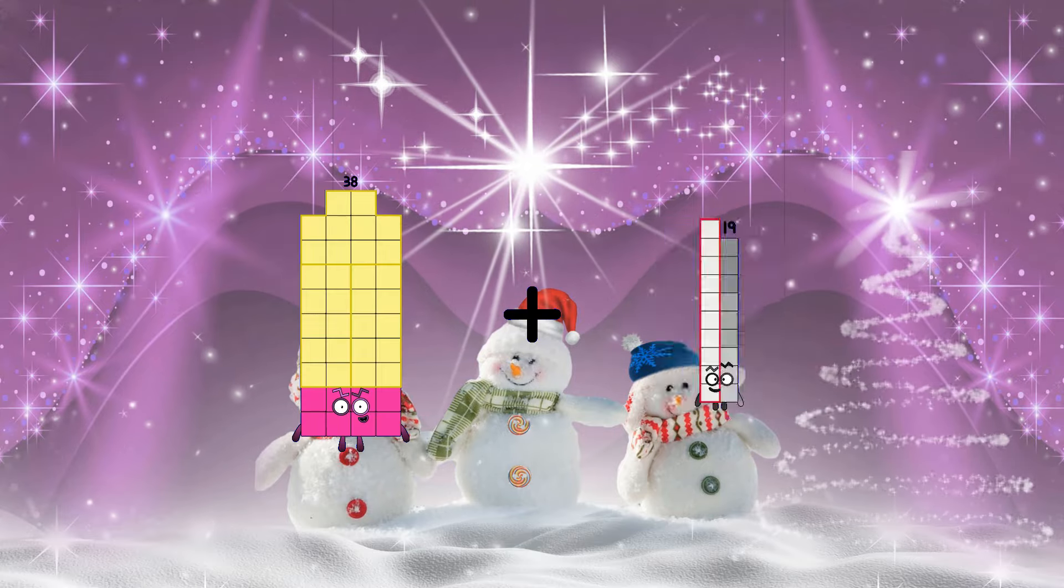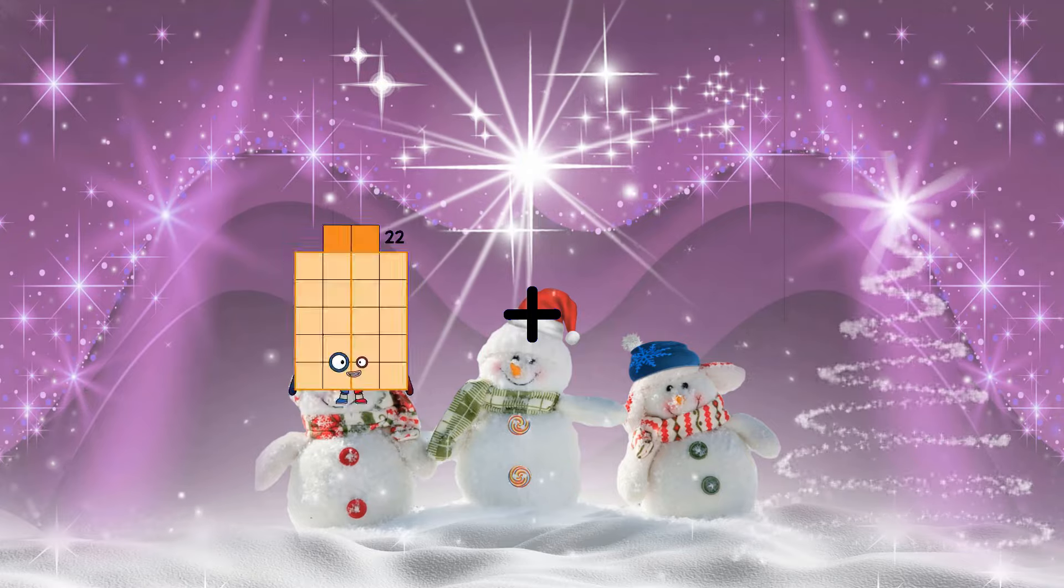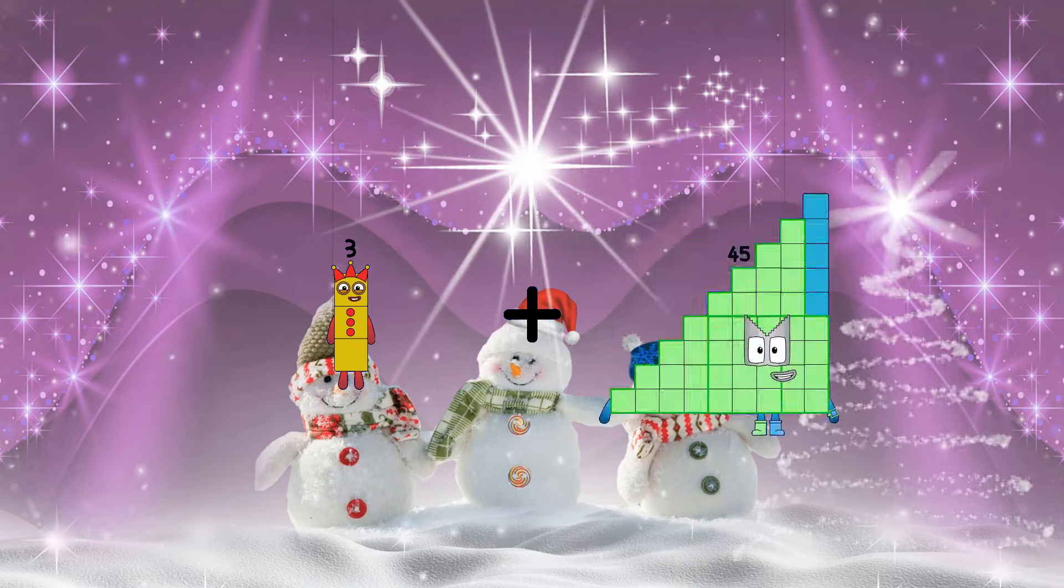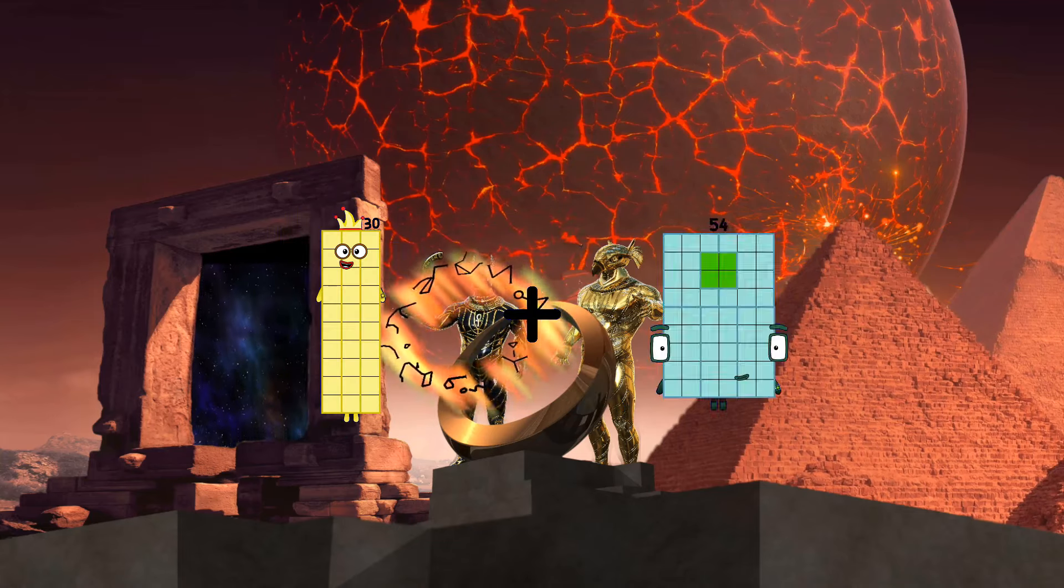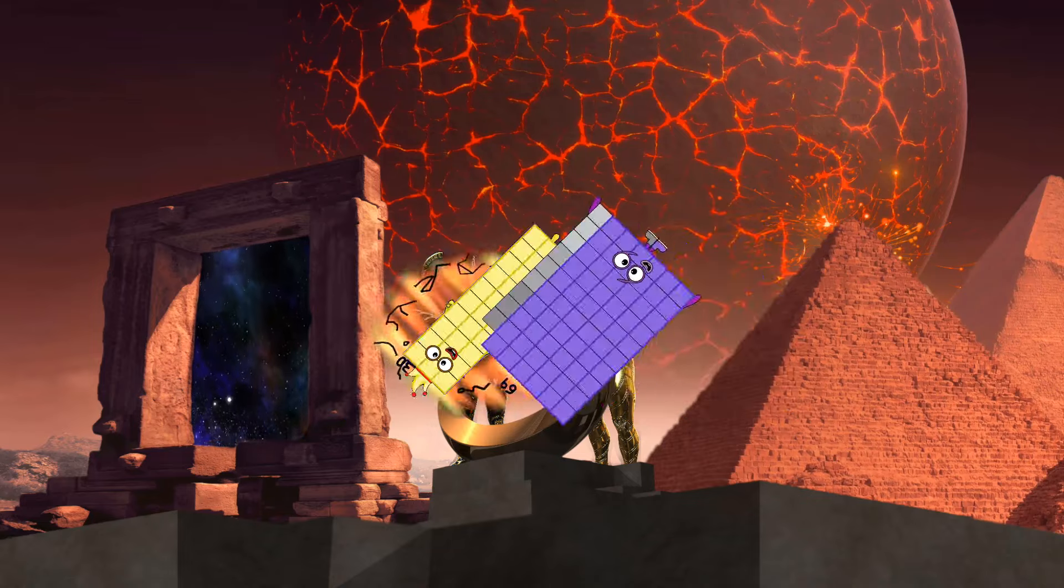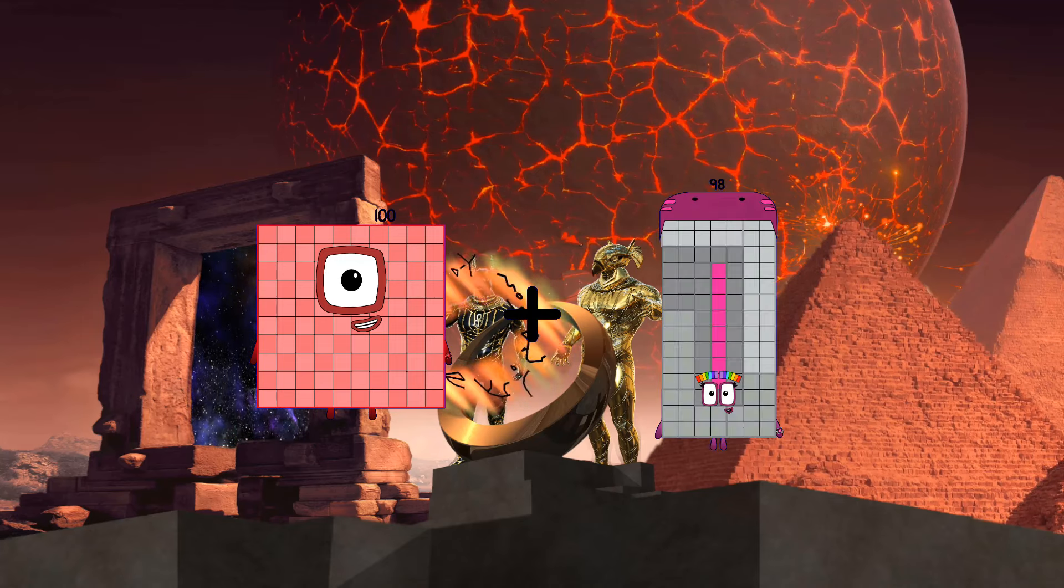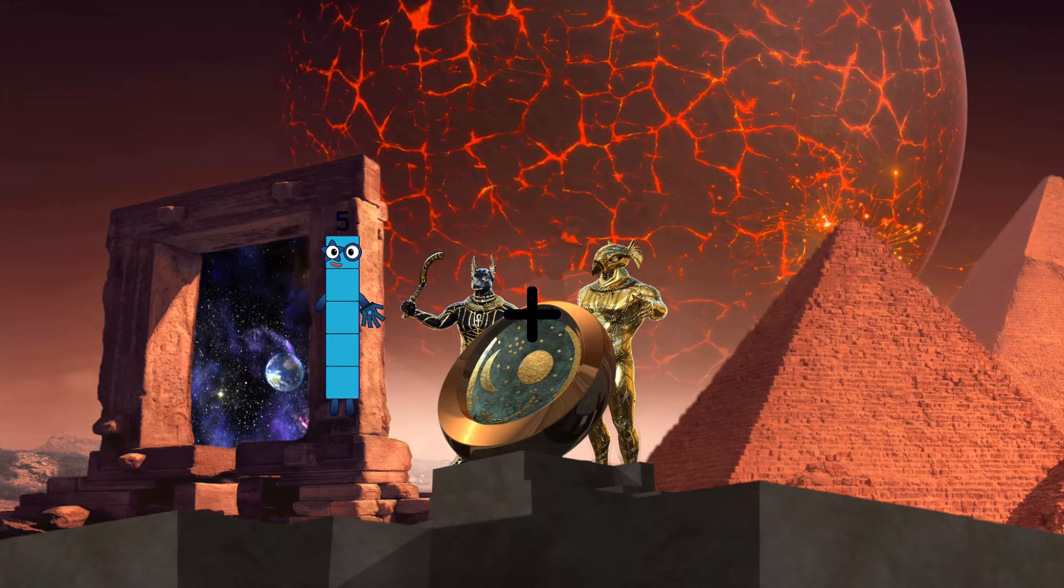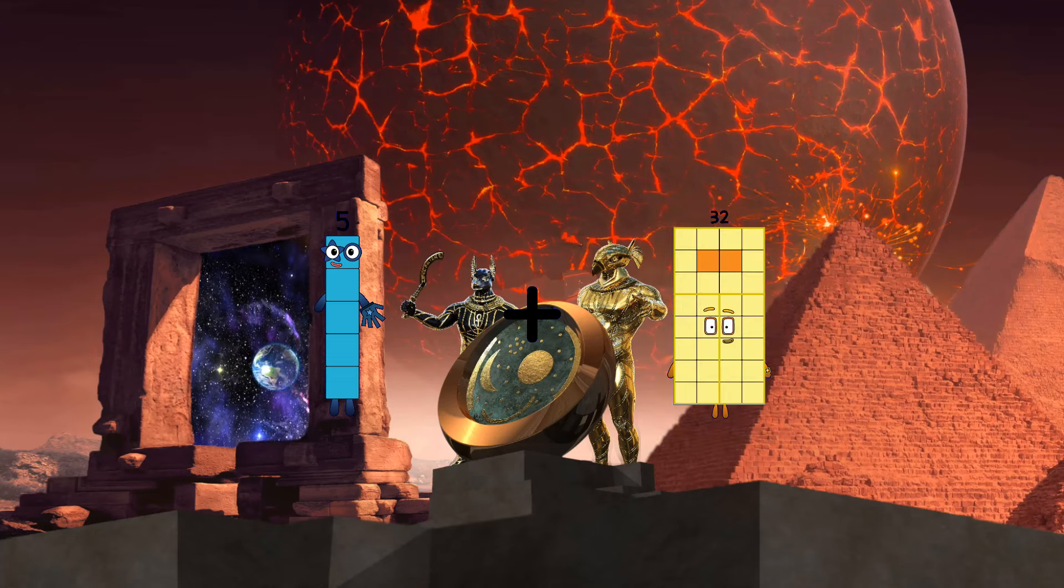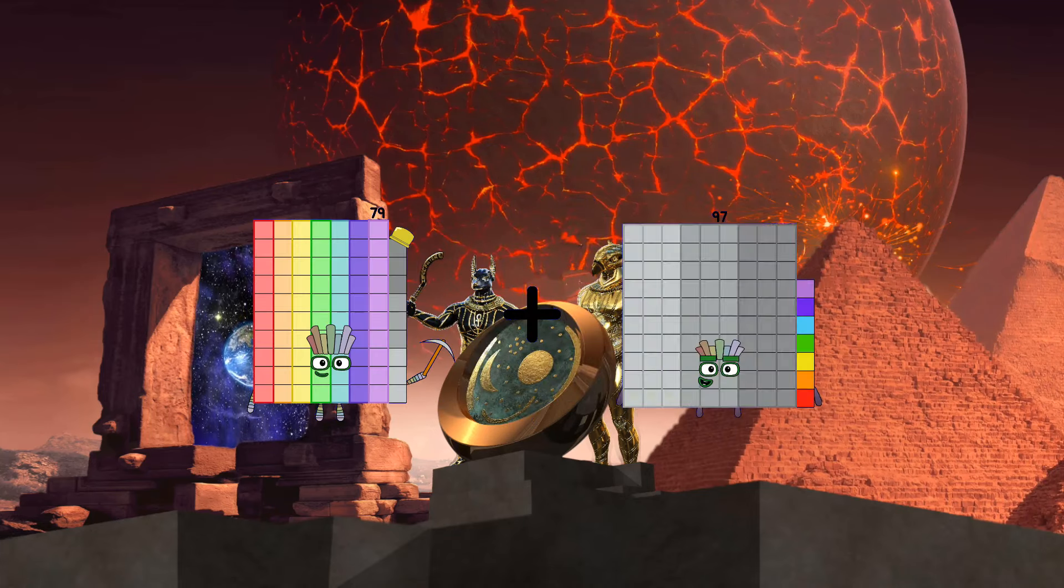38 plus 17 equals 55. 3 plus 79 equals 82. 30 plus 69 equals 99. 100 plus 29 equals 129. 5 plus 32 equals 37. 79 plus 60 equals 139.